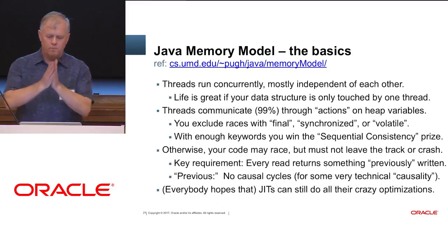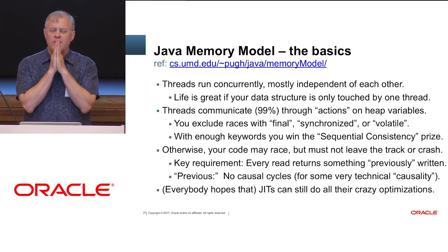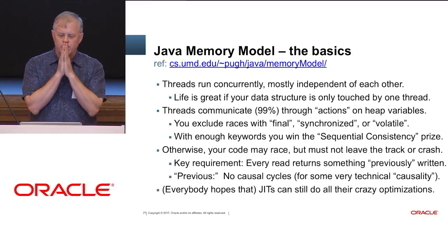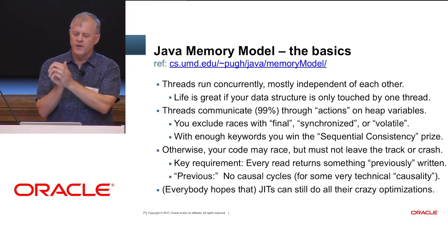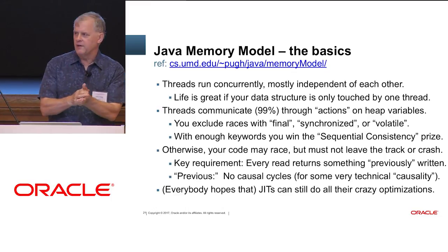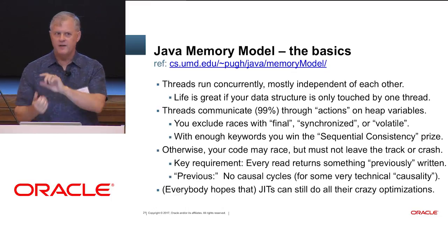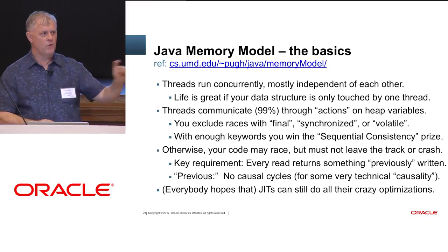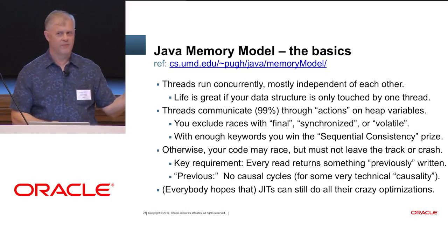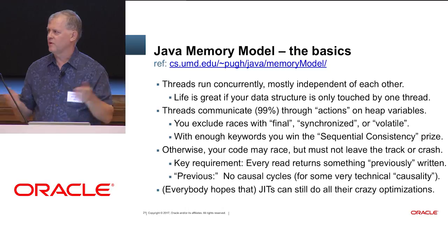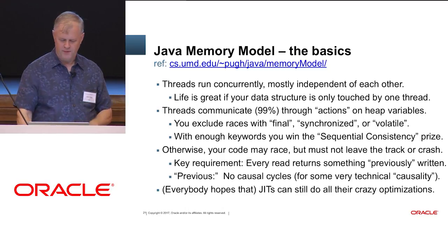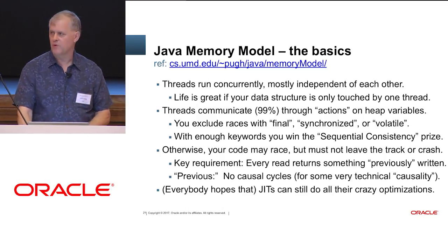The easy parts: threads run concurrently. Life is great if you're only in one thread — what could go wrong? Nothing, really. There are no race conditions. It's very easy to wrap a good confinement and make a good abstraction inside of one thread.